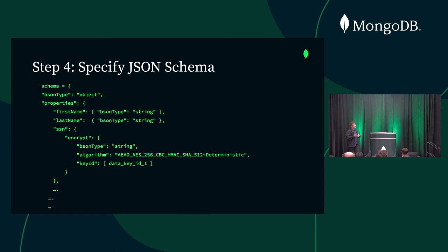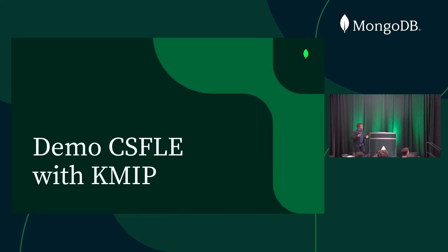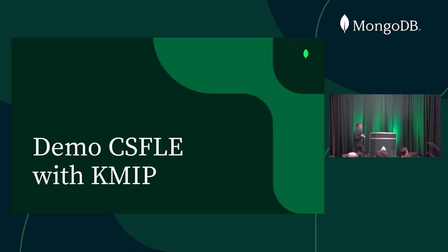Once you have that, you can run your query. Normally you'd just do a MongoClient with your connection string, but now to enable client-side field-level encryption, you just add the CSFLE options as a last parameter. Your connection is now CSFLE-enabled. You don't make any other changes — the insert statement is still the same insert statement regardless. You put this in your base connection class when connecting to the database.